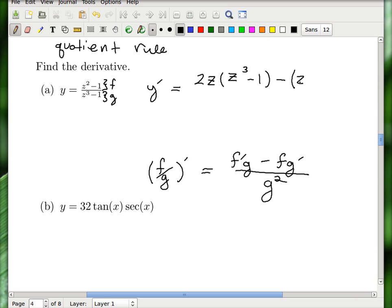Now I do minus, leave the top alone, z squared minus 1. And now you do the derivative of the bottom, which is 3z squared. And this is all over the bottom squared, which is z cubed minus 1 squared.